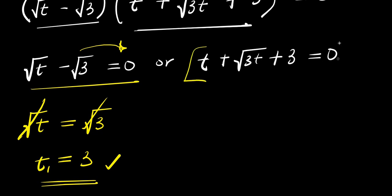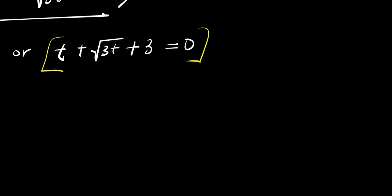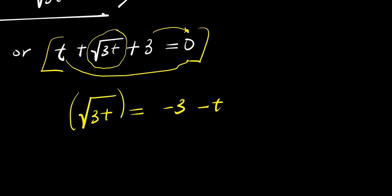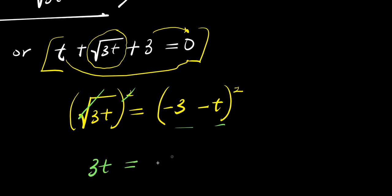Now I need to solve the second equation to find the other values of t. I need to isolate the square root of 3t. Moving the other terms over: square root of 3t equals negative 3 minus t. To eliminate the square root, I take the square of both parts of this equation. The square root cancels on the left, giving 3t equals (negative 3 minus t) times (negative 3 minus t).